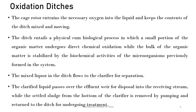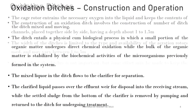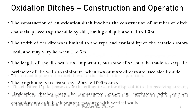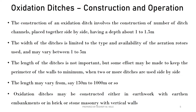Activated sludge is mixed with raw sewage. Like the ASP, a secondary clarifier is used for separation. The treated water is used as effluent and discharged to the receiving stream. After the raised sludge step, sludge is further processed.